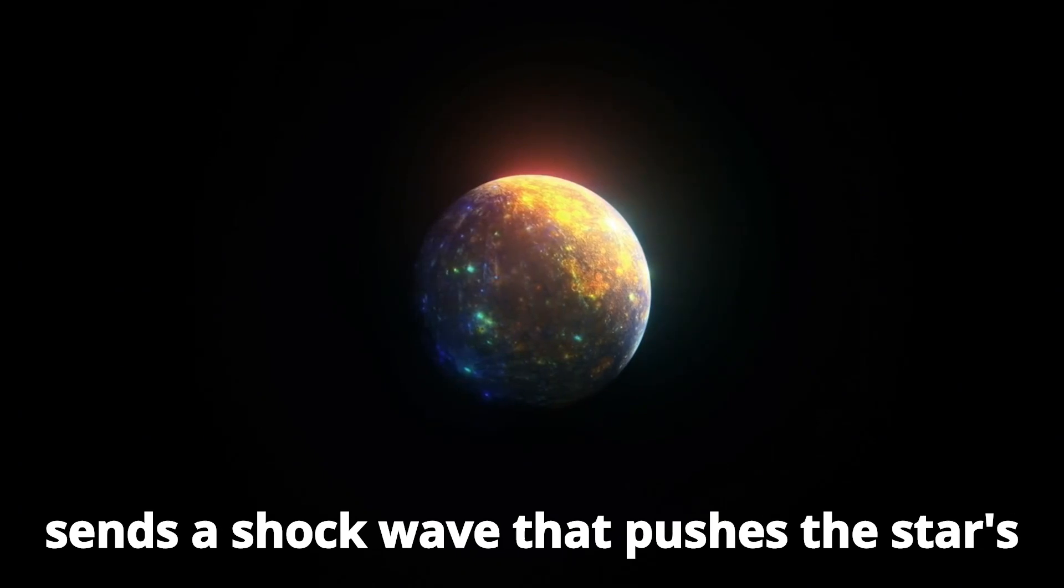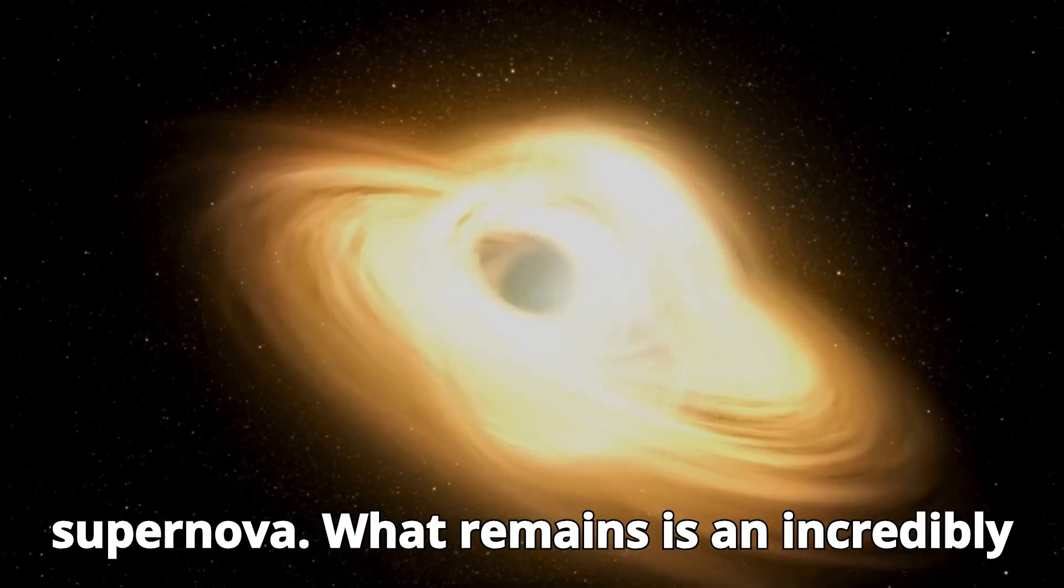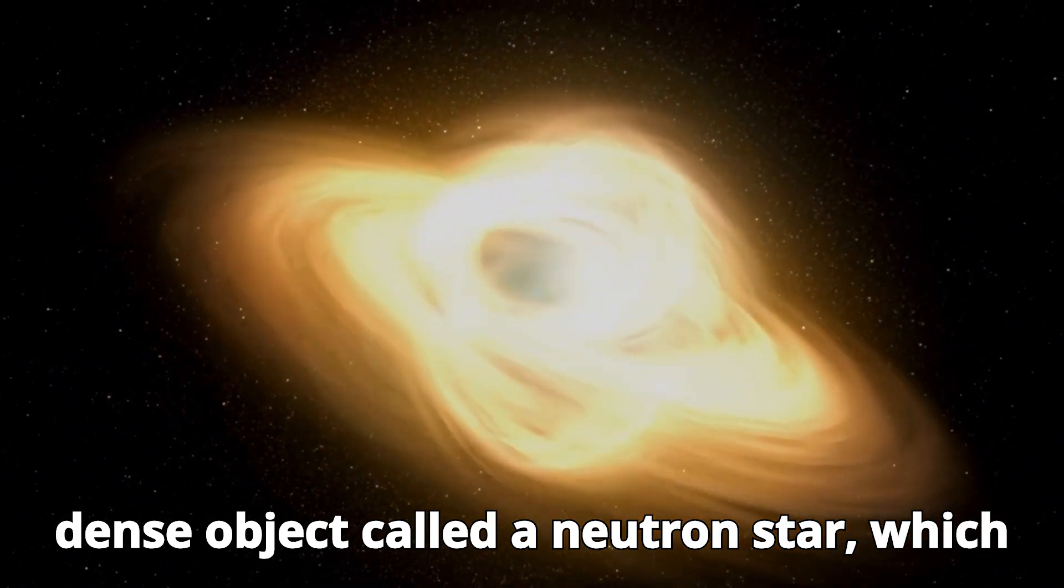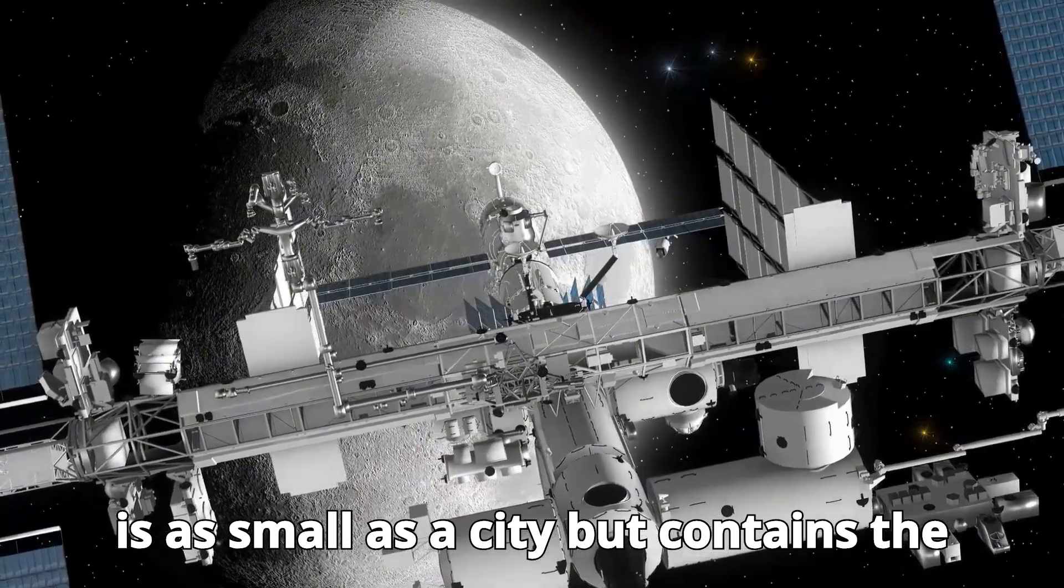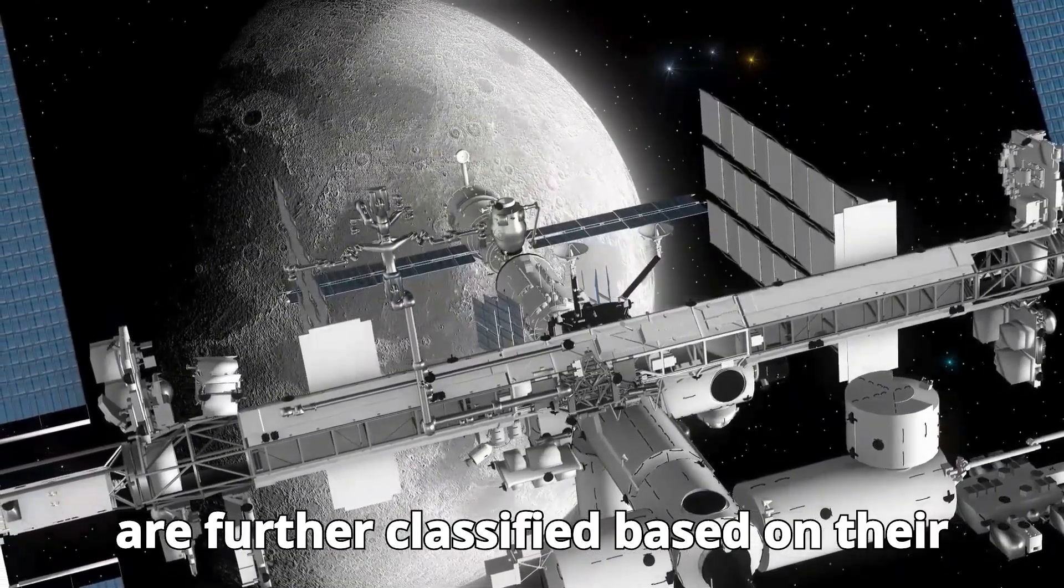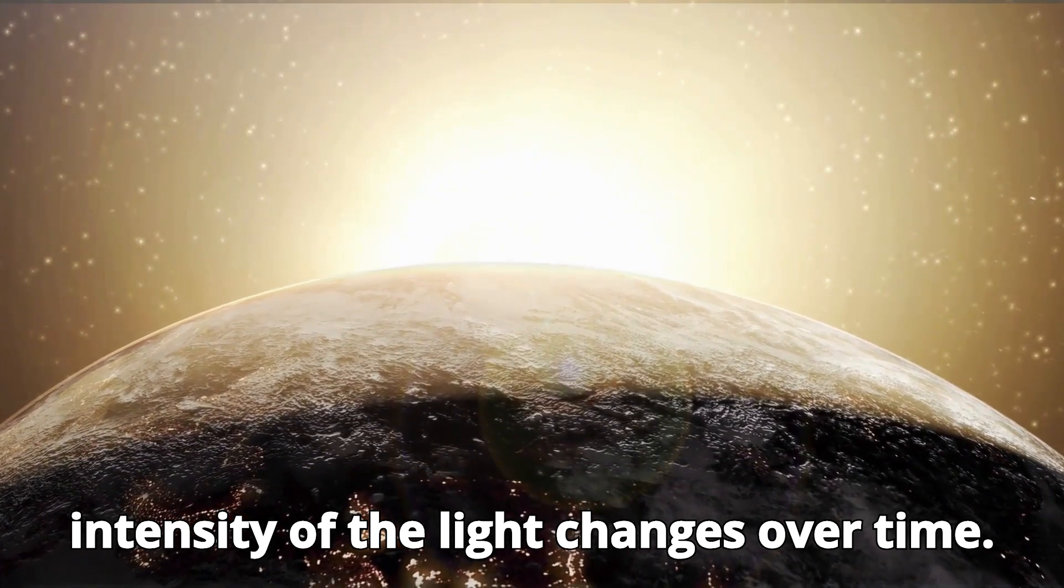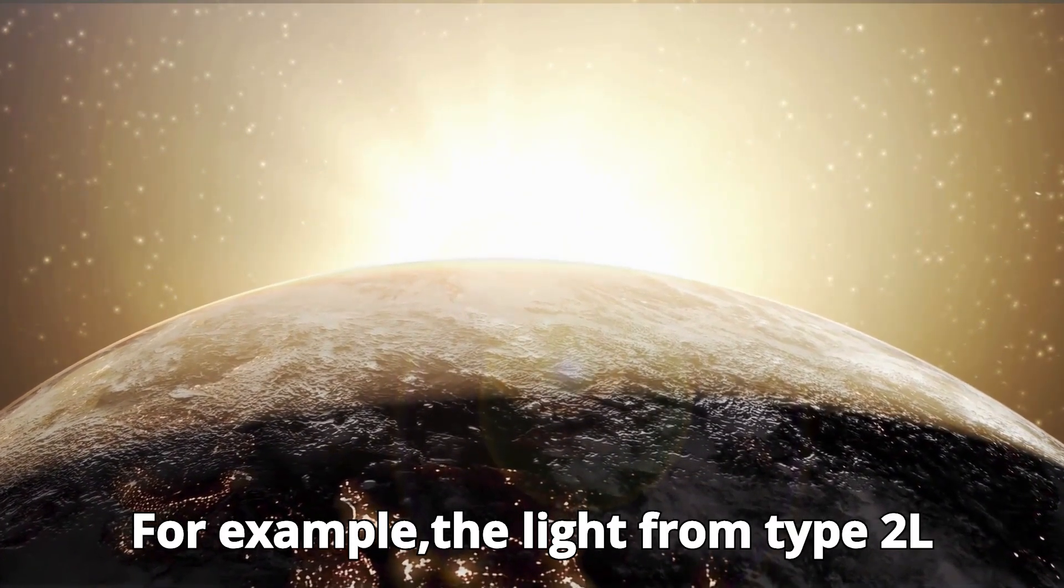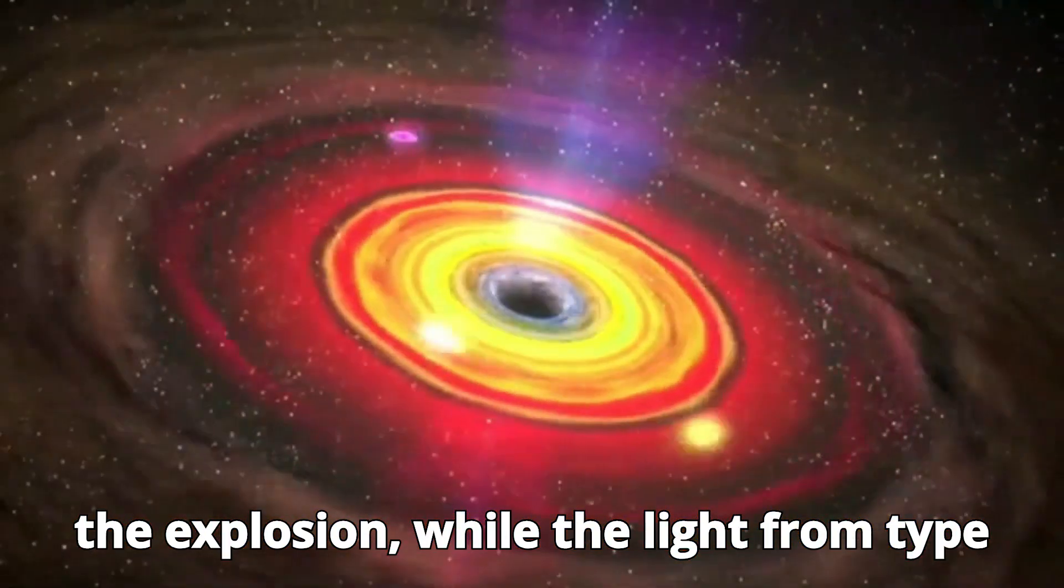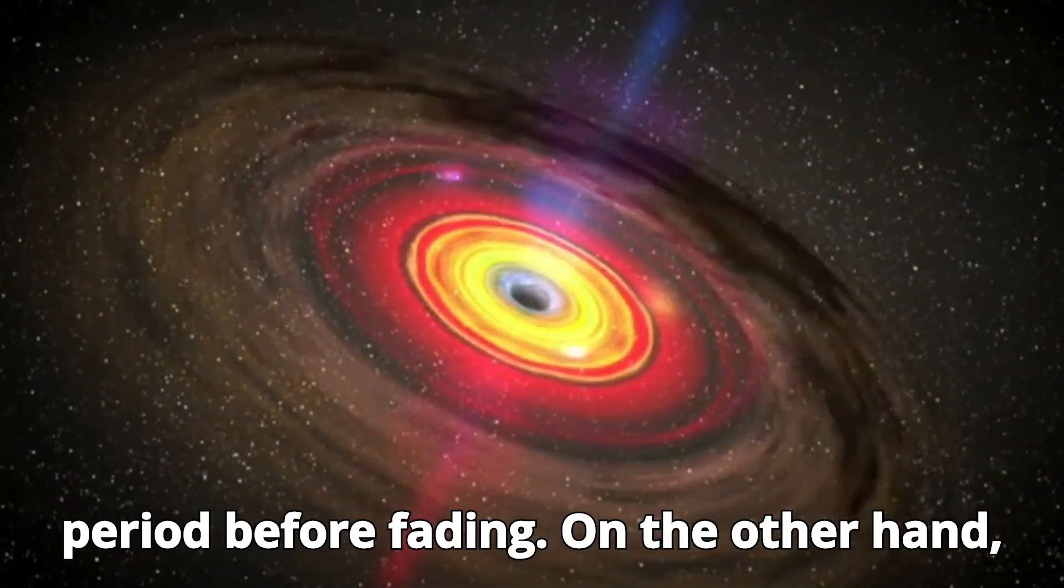When the explosion occurs, it sends a shock wave that pushes the star's material into space, creating the supernova. What remains is an incredibly dense object called a neutron star, which is as small as a city but contains the mass of the sun. Type 2 supernovae are further classified based on their light patterns, which describe how the intensity of the light changes over time. For example, the light from type 2L supernovae consistently decreases after the explosion, while the light from type 2P supernovae remains steady for a long period before fading.